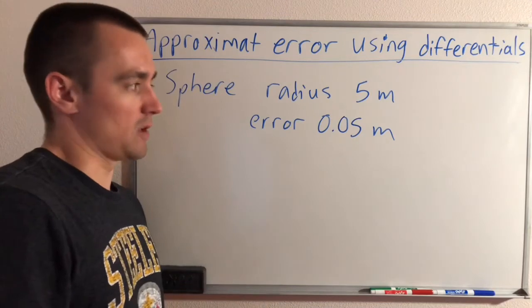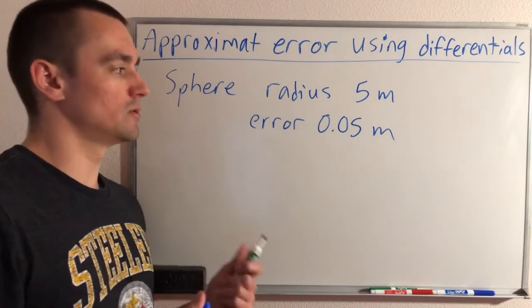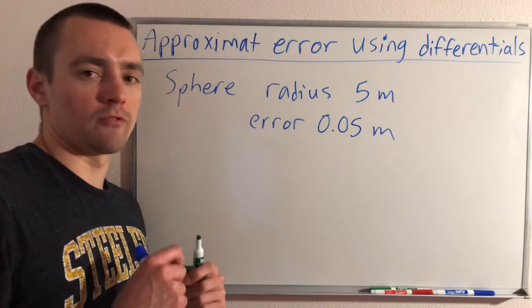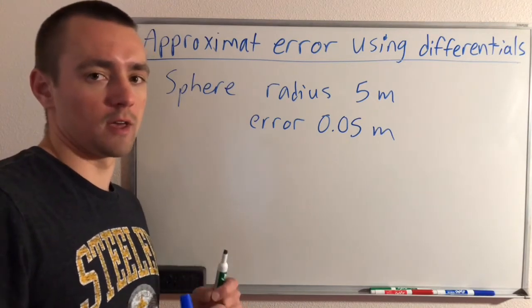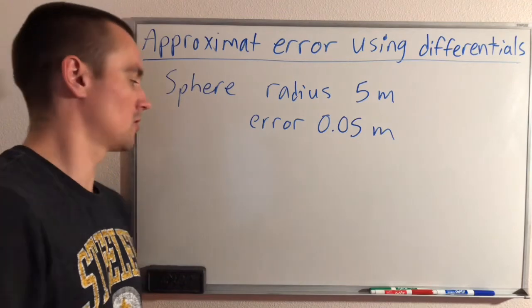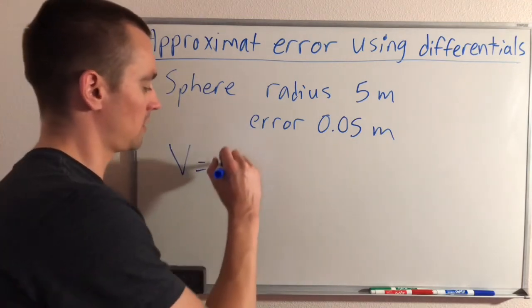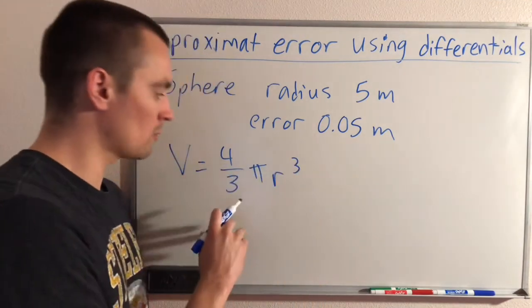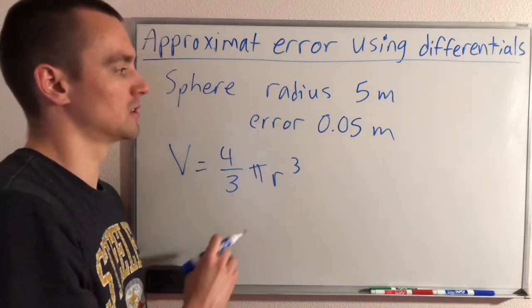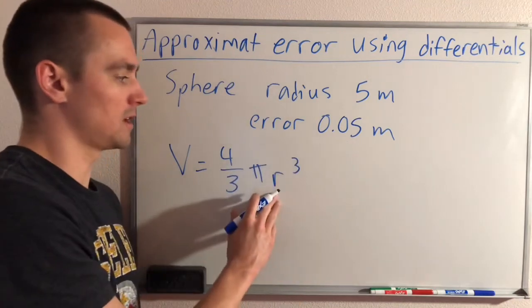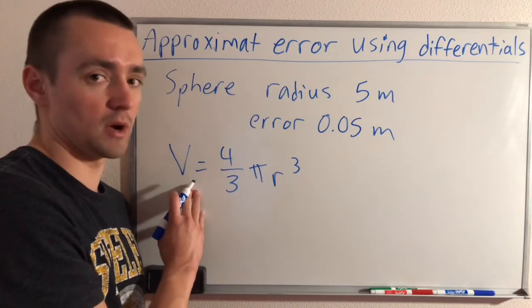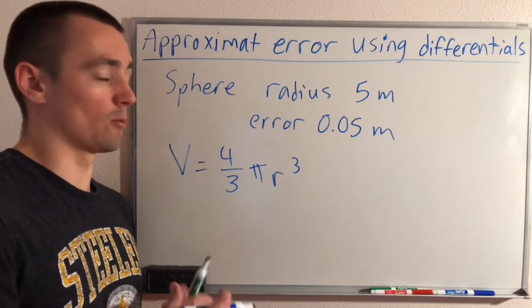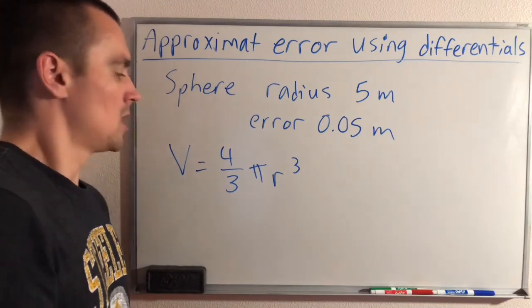Basically what we want to do is, knowing the fact that our radius could be off by a little bit, we want to figure out the maximum error that could be in our volume. If we know the volume of our sphere is four-thirds pi r cubed, we want to use this and differentials, knowing the possible error in our radius, to figure out how much error there could possibly be in the volume that we're trying to measure of this sphere.